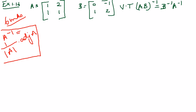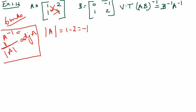Before we find A inverse, we have to ensure that mod A and mod B is not equal to 0. This is because if it becomes 0, you cannot find A inverse — it will become 1 by 0, which is infinity. So first ensure mod A and mod B are not equal to 0. Mod A is this into this minus this into this, so 1 minus 2, which is minus 1. Good, it's not 0.